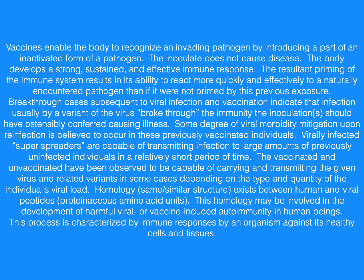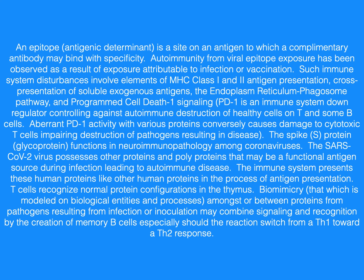Homology exists between human and viral peptides. This homology may be involved in the development of harmful viral or vaccine-induced autoimmunity in human beings, characterized by immune responses by an organism against its healthy cells and tissues. An epitope is a site on an antigen to which a complementary antibody may bind with specificity. Autoimmunity from viral epitope exposure has been observed as a result of exposure attributable to infection or vaccination. Such immune system disturbances involve elements of MHC class 1 and 2 antigen presentation, cross-presentation of soluble exogenous antigens, the endoplasmic reticulum phagosome pathway, and programmed cell death 1 signaling.